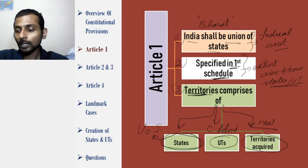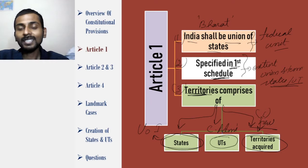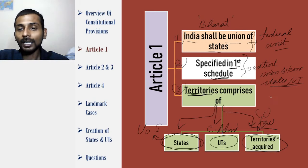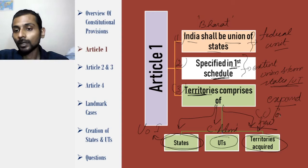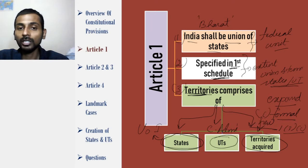One more thing to add: Article 1 Clause 3 Subclause C does not exactly empower the parliament or the constitution to go ahead and expand. What it ensures is that if a new territory which is rightfully ours is to be added, this addition and assimilation of the new territory is formal. Thus, Article 1 Clause 3 Subclause C ensures the formal assimilation of new territory into India.